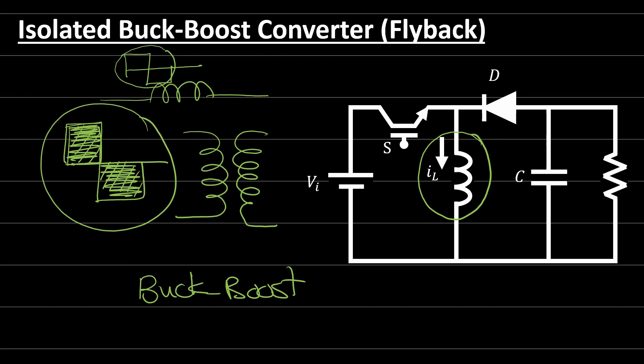This inductor has an AC voltage waveform applied on it. So we can simply remove this inductor and replace it with a transformer. By doing this, we can convert the traditional buck-boost converter to an isolated DC-to-DC converter — the isolated buck-boost converter, or what we call the flyback converter.